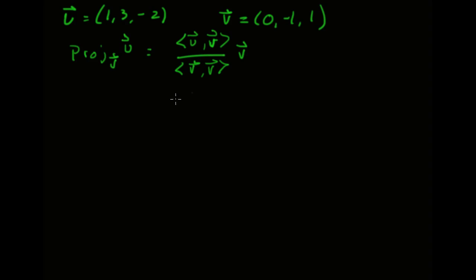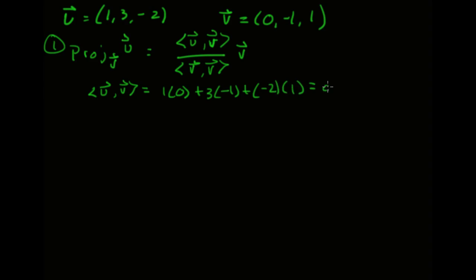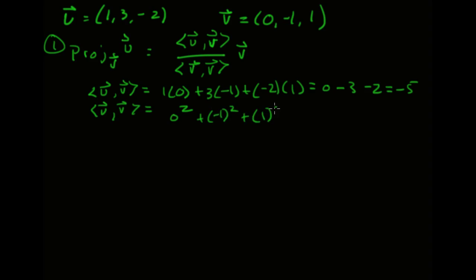The inner product of u and v is the dot product: 1 times 0 plus 3 times -1 plus -2 times 1, which is 0 minus 3 minus 2, giving -5. The inner product of v with itself is 0 squared plus (-1) squared plus 1 squared, which equals 2. So the scalar coefficient is -5 over 2, and the vector v is (0, -1, 1).